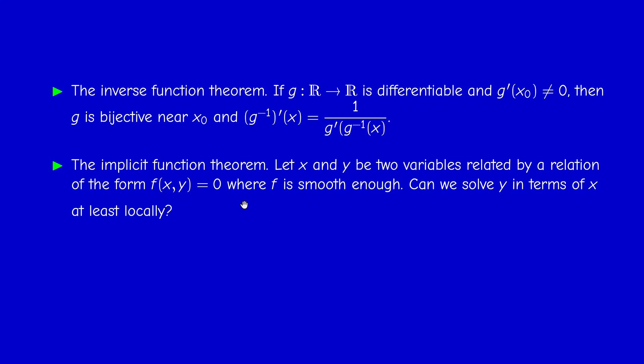We cannot solve Y in terms of X globally, but we can do that locally. Okay. On pieces, on some pieces of the circle, we can write Y in terms of X, or X in terms of Y. And, here's the result. It's very easy to state. If the partial derivative with respect to Y of F is not 0, does not vanish at some point, X0, Y0. Then, locally, Y is the graph, is a function of X, is a smooth function of F. Okay.